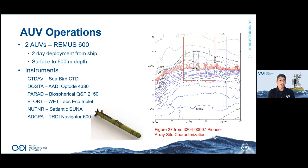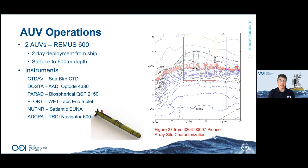Pioneer also has two Remus 600 AUVs, deployed from a ship only, on two-day deployments operated concurrently — one traveling along-shelf and one across-shelf simultaneously. They're deployed during our regular Pioneer Array turns, which happen every six months — once in spring, once in fall — and also from smaller ships during coastal glider turns every two to three months depending on weather.